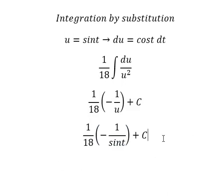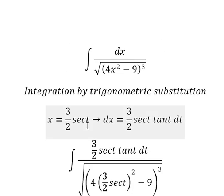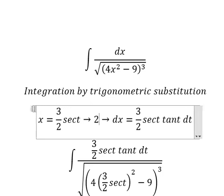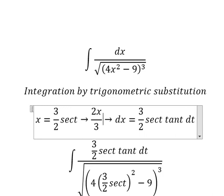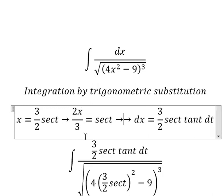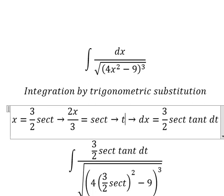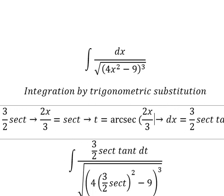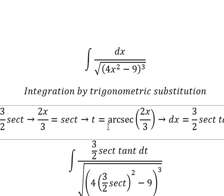For t, that is this one. So we divide both sides by 3 over 2. And now we get t equals arcsecant of 2x over 3. So I will put this one to change for t.